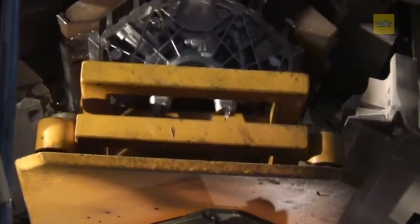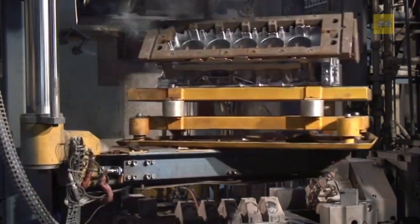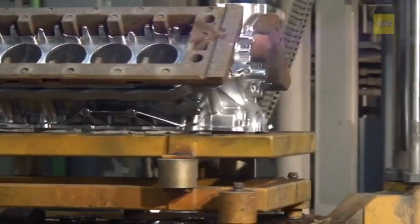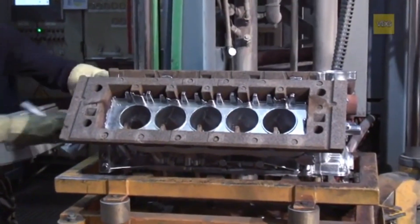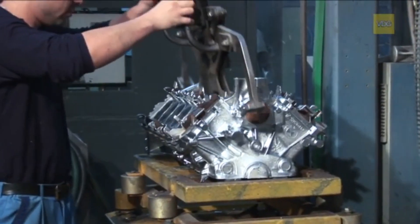After the retraction of the side sliders, the casting is ejected. Before the casting is transported for further processing, the foundry worker removes any external sand core markings and inspects the casting quality.